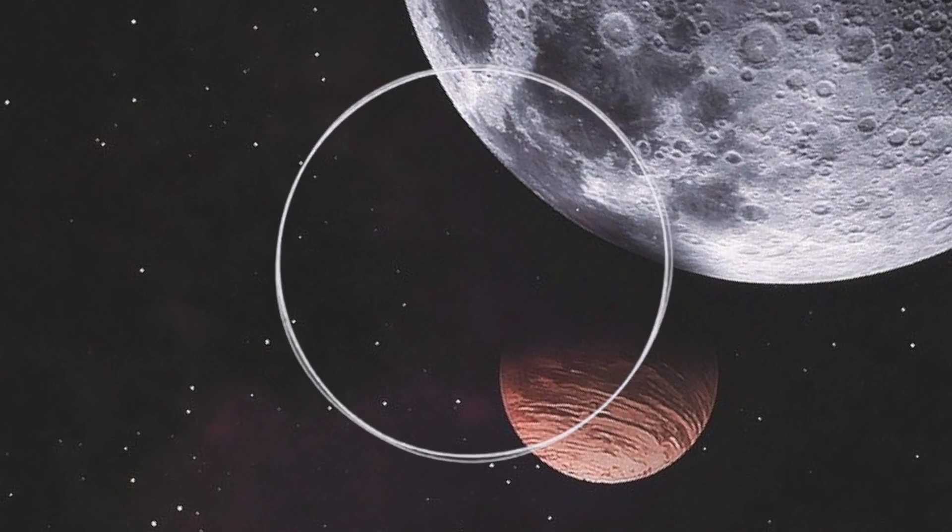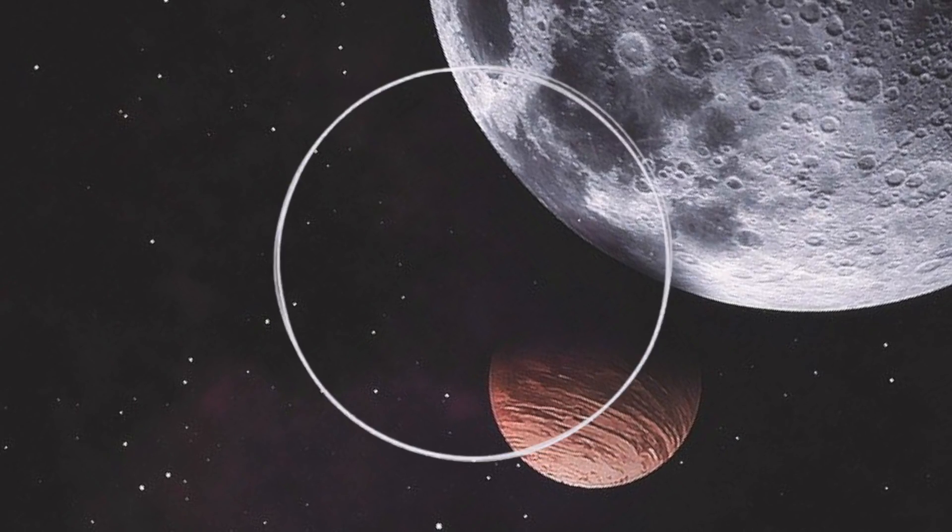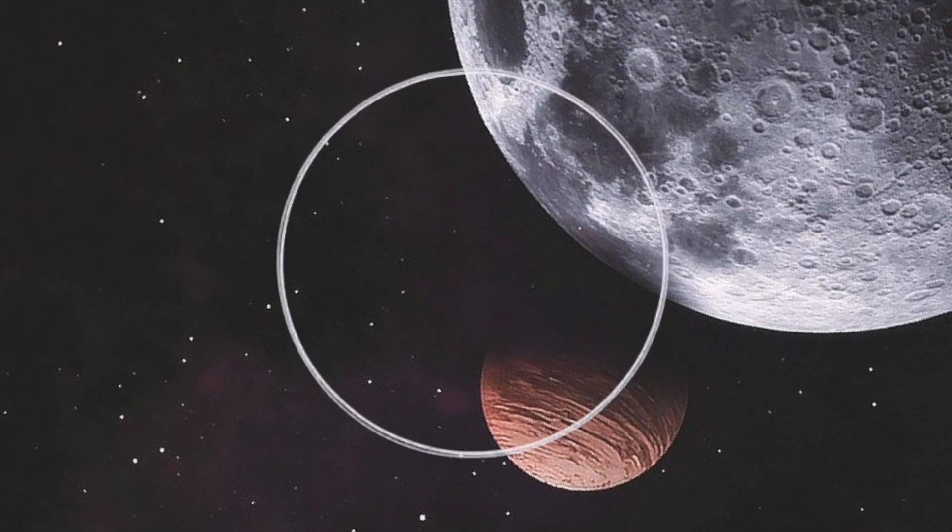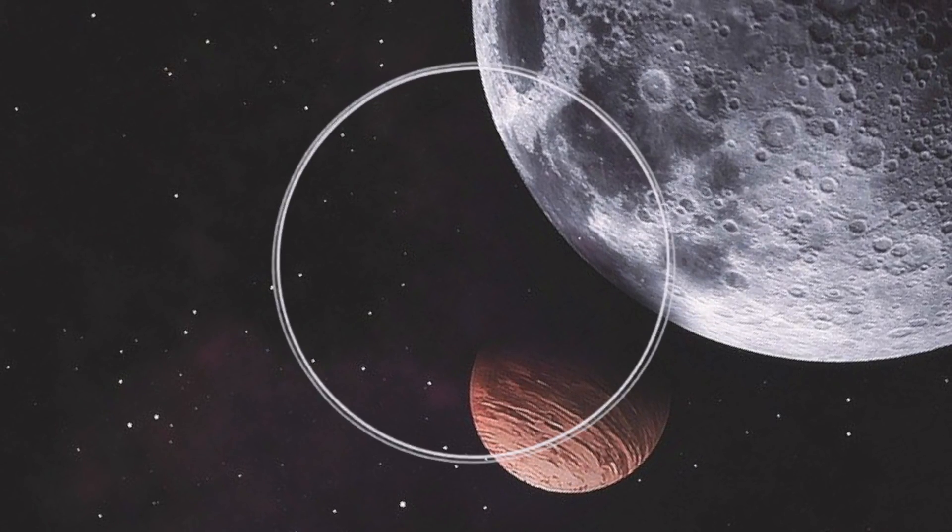But, due to the bulge caused by the centrifugal force created by the Earth's constant spin, that actually pushes the summit of Chimborazo a further 6,800 feet from the center of the Earth, making the Ecuadorian mountain the closest point to the stars on Earth.